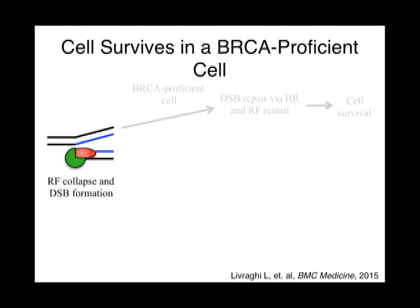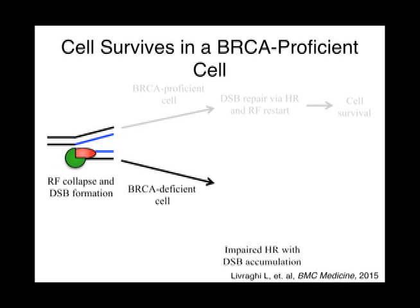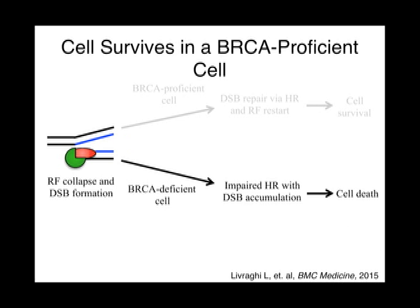In contrast, in a BRCA-deficient cell, homologous recombination is impaired and the double-stranded break persists, which eventually leads to cell death.